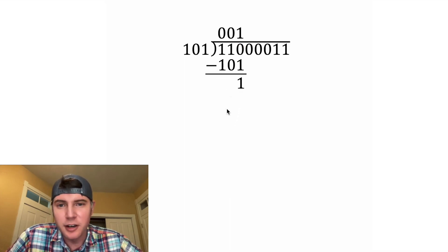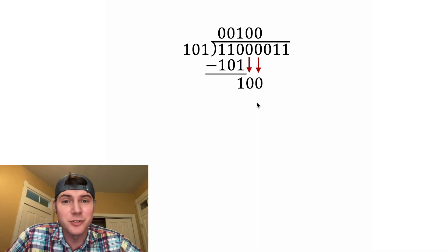So now let's clean all this up, and let's bring down that 0. How many times does 101 go into 10? Well, that's zero times. Let's bring down the next one. How many times does 101 go into 100? That's also 0 times.